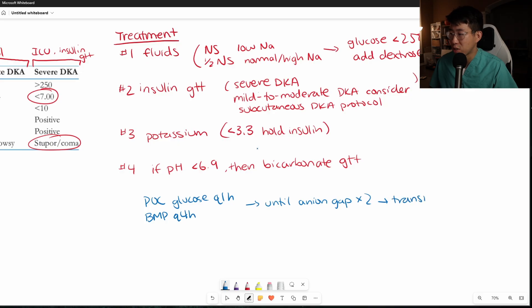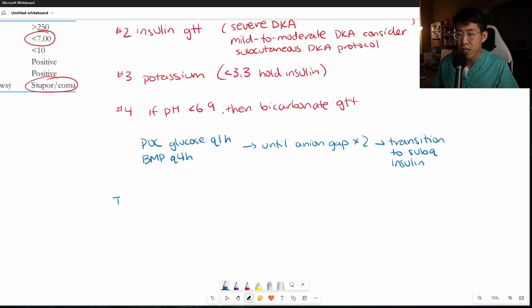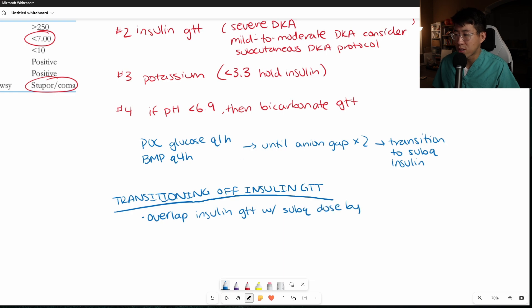So after that, transition to subcutaneous insulin regimen. So how exactly do you transition somebody off of an insulin drip to a subcutaneous regimen? Transitioning off an insulin drip. One of the key points that gets brought up a lot is you want to overlap your insulin drip with your first long acting subcutaneous dose by two hours. The reason is it takes a little bit of time for that first subcutaneous dose to start to kick into effect. And you want to keep the insulin drip on during that two hour period, because if you abruptly discontinue the insulin drip, you risk the chance that the patient will actually go back into DKA because there's that gap where they're not really getting good insulin coverage.